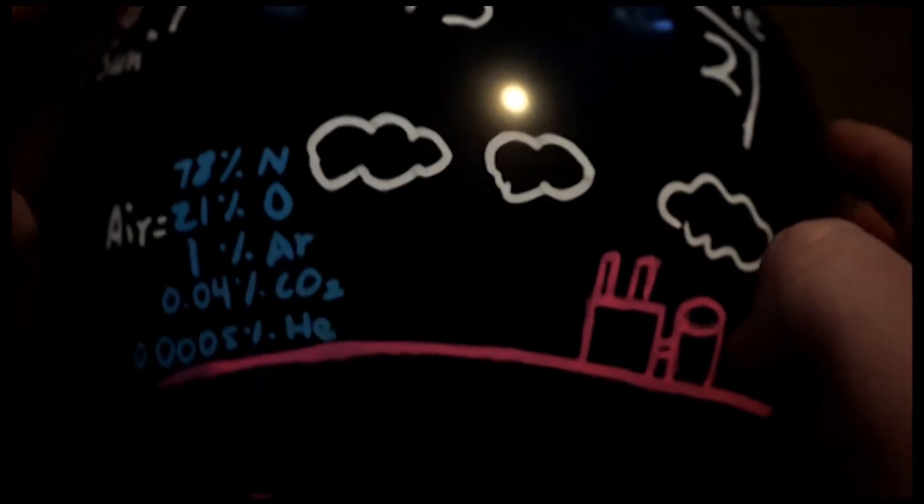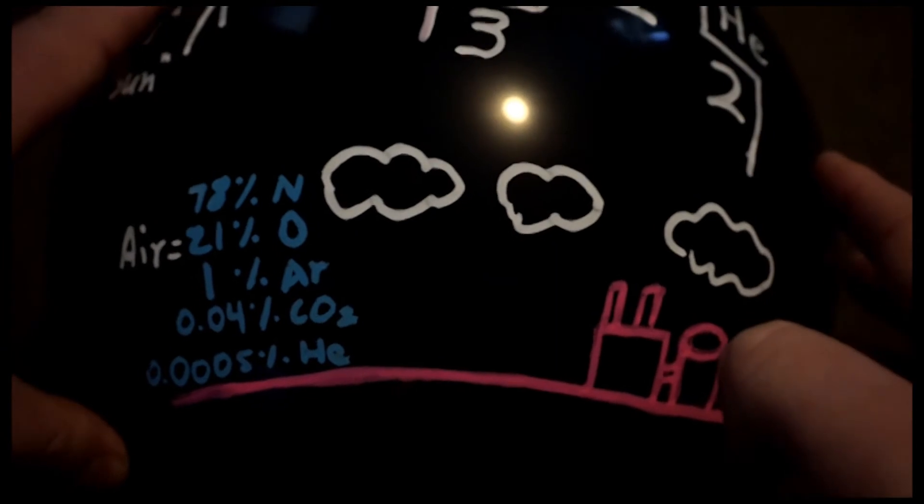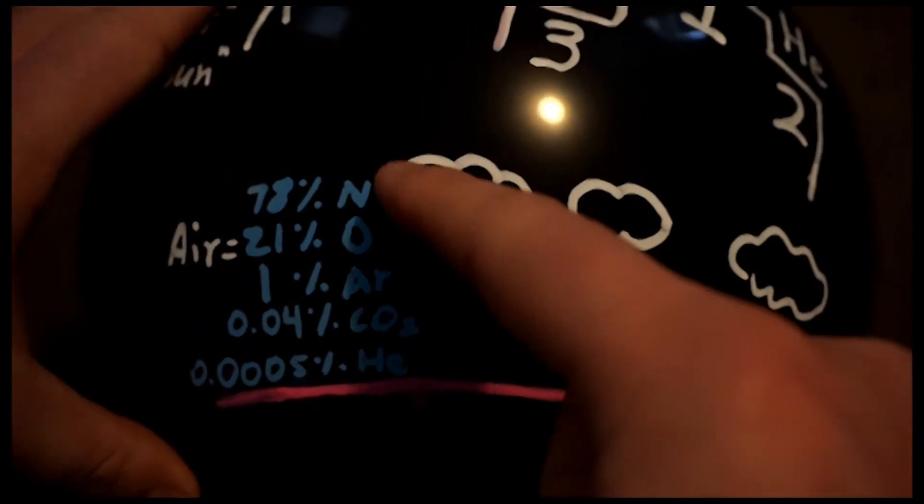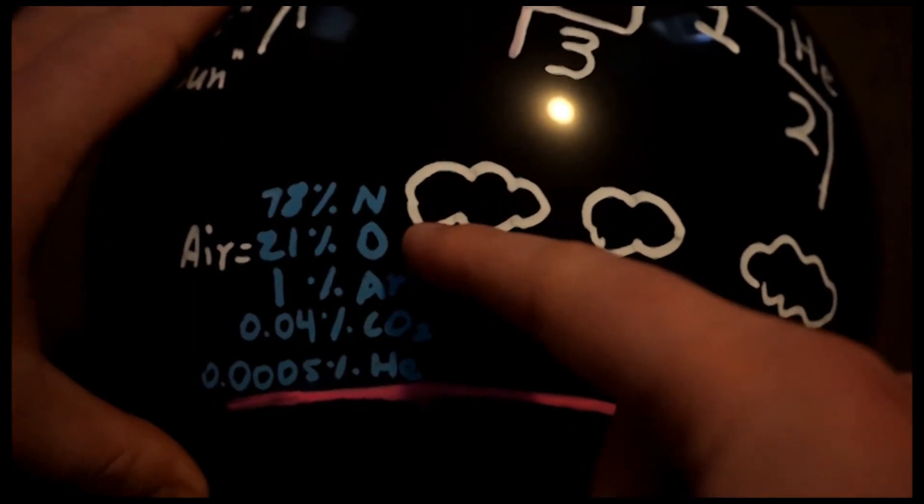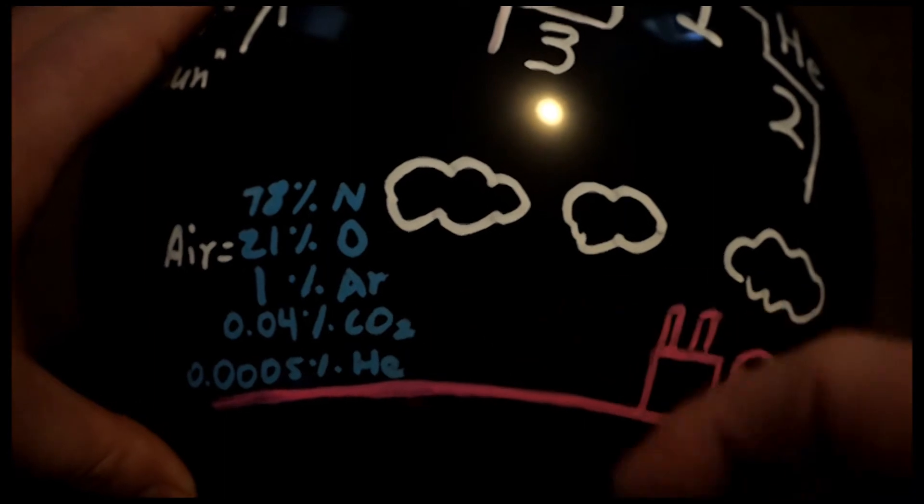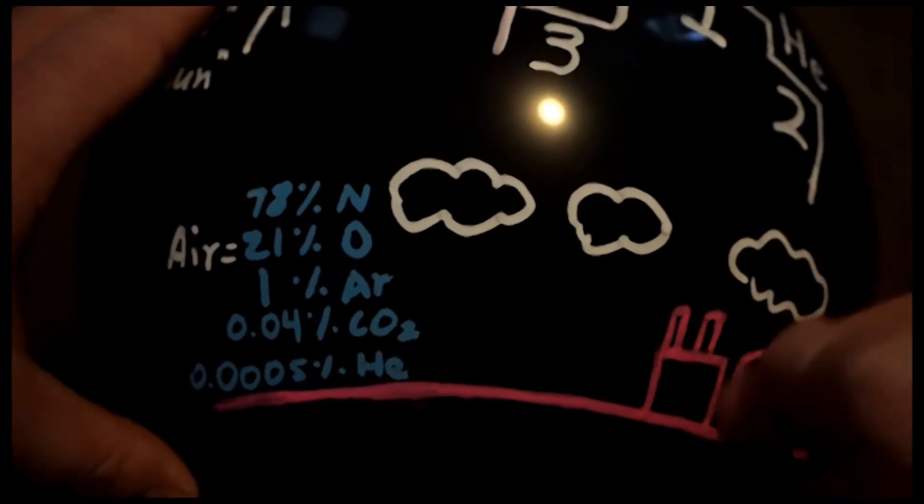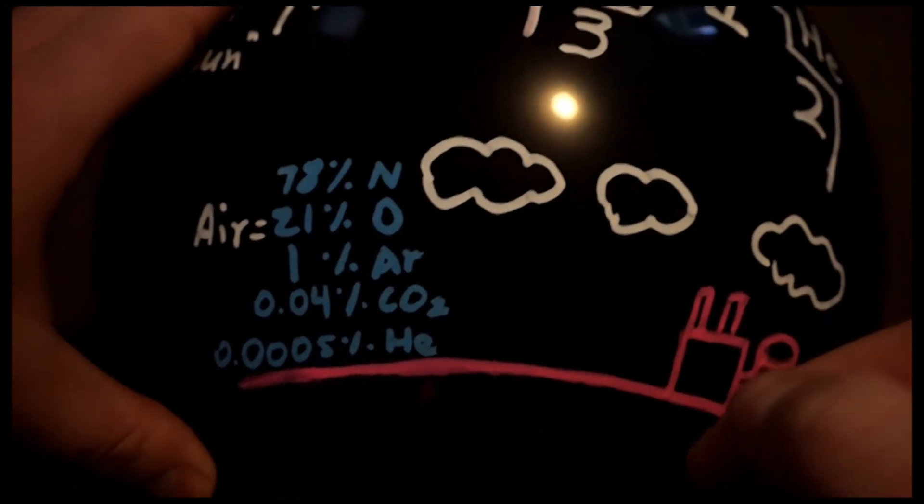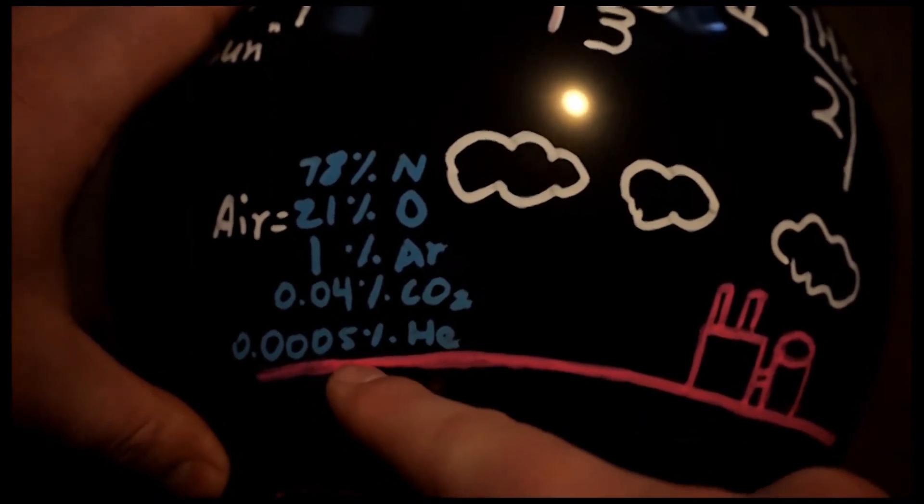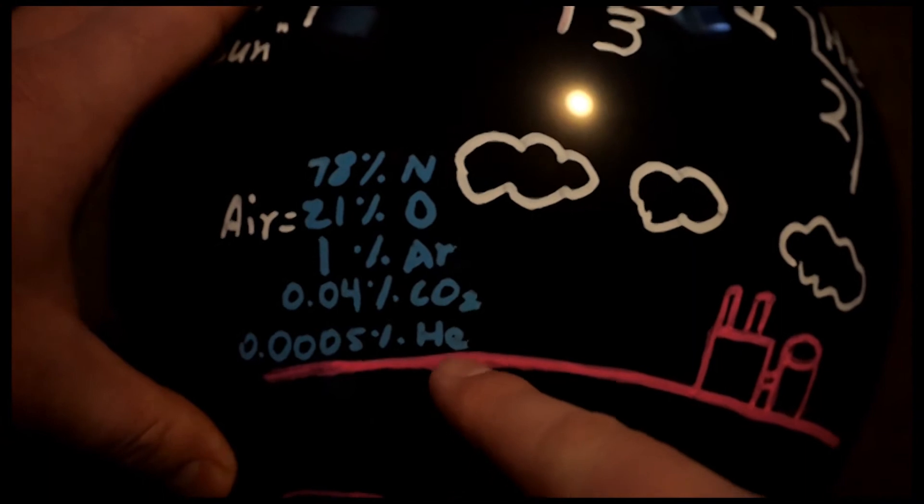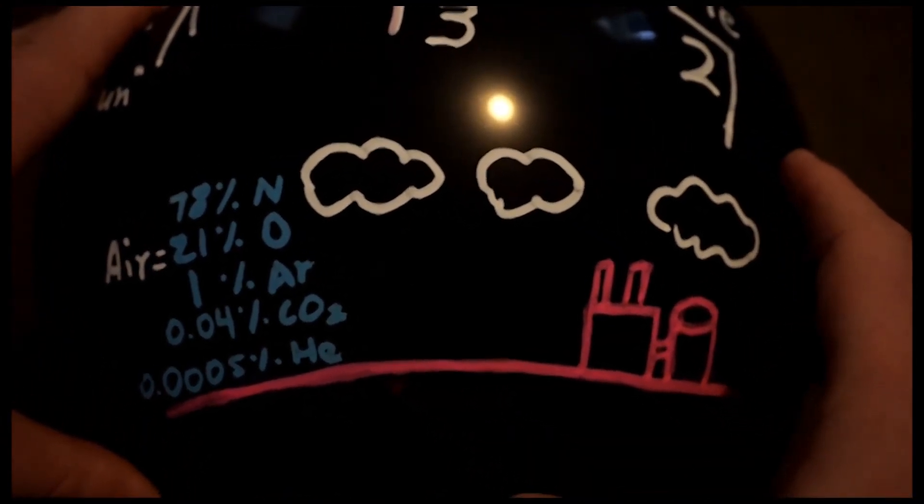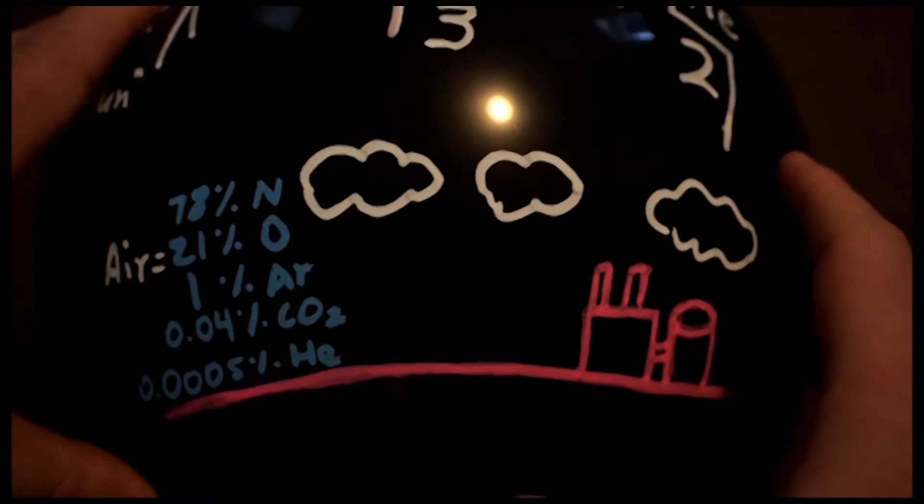On Earth, helium is found naturally in two places. Firstly, the atmosphere. Air in the atmosphere consists of 78% nitrogen, 21% oxygen, 1% argon, 0.04% carbon dioxide, and then other gases like methane. Helium is present in five parts per million, which basically means 0.0005% of the air we breathe is helium, which is a tiny amount. And actually, helium is slowly escaping into outer space as well.